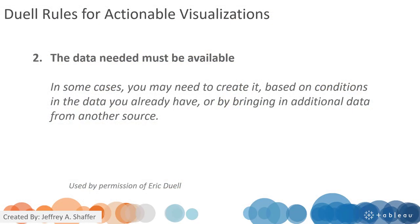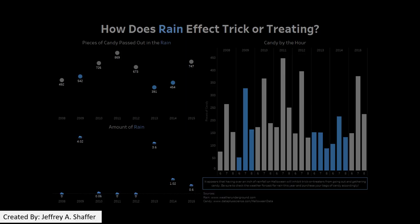The second principle is that the data needed must be available. Sometimes if you don't have the data in the original dataset, you can get it from additional data resources, or you need to create some calculations to generate the needed data. For example, with the Halloween data, the actual dataset can be appended to create a richer analysis — in this case, they also incorporated weather data to show how rain affected trick-or-treating.